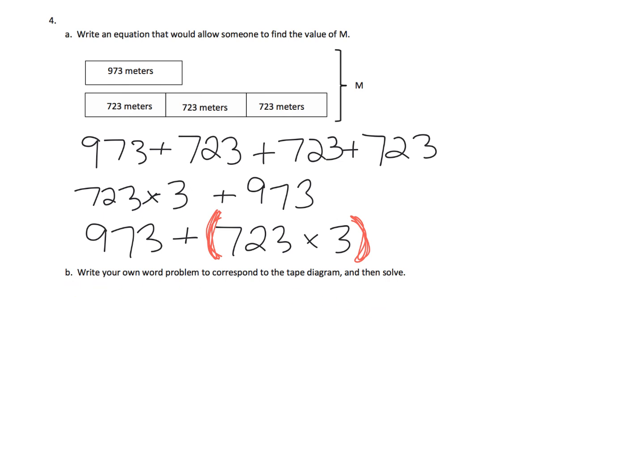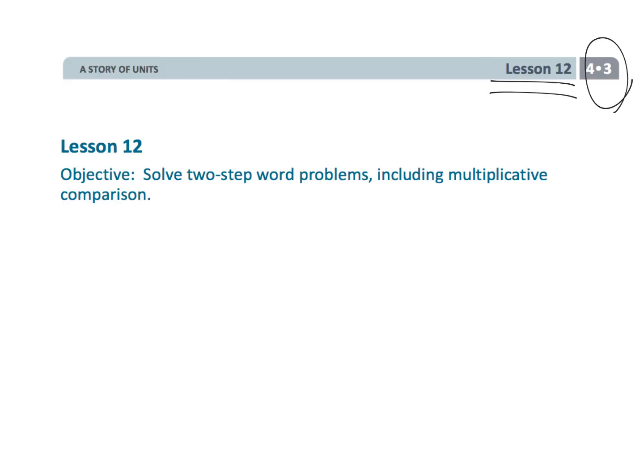It says write your own word problem. Parents and teachers, let your students differentiate and get creative. Let them invent their own tape diagrams and have somebody else write the story problem, or vice versa — let somebody write the story problem and somebody else draws the tape diagram. This is a prime opportunity to allow students to differentiate. That wraps up fourth grade module 3 lesson 12, where students are solving two-step word problems to practice the standard algorithm for multiplication.